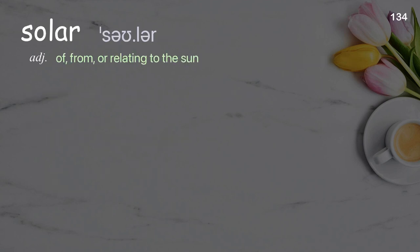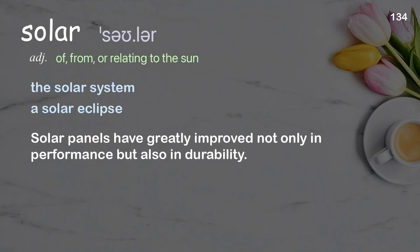Solar: of, from, or relating to the sun. Examples: the solar system, a solar eclipse. Solar panels have greatly improved not only in performance, but also in durability.